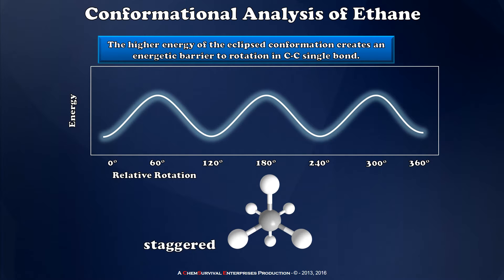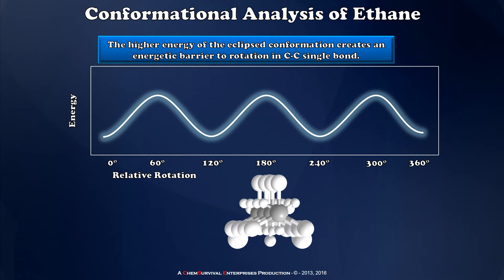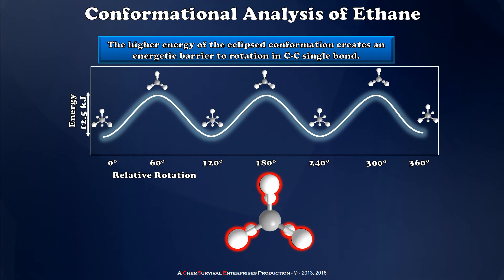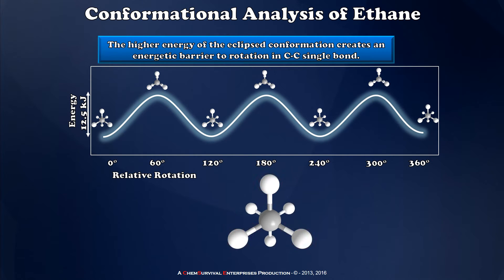The local minima in the energy correspond to the staggered conformation, and a 60 degree rotation leads me to the local maxima, which are the eclipsed conformations. In the case of the ethane molecule, all three of those staggered and eclipsed configurations relatively speaking have the same energy. But this is not going to be true of butane, so let's take a look at what happens when we add something besides just hydrogens to these six positions that stand out during our Newman projection.